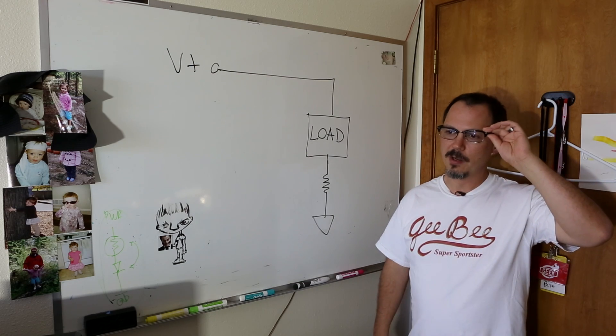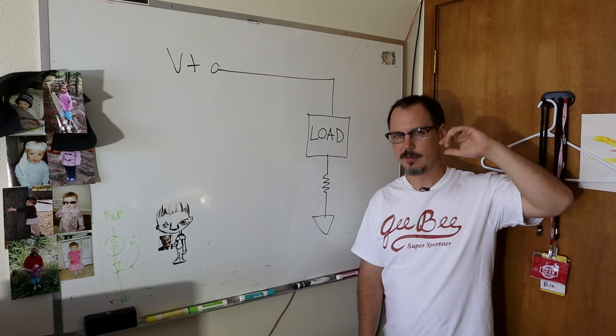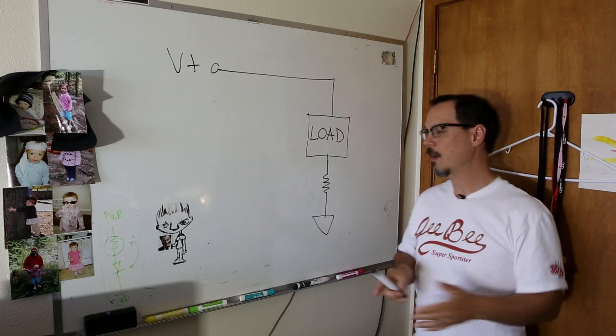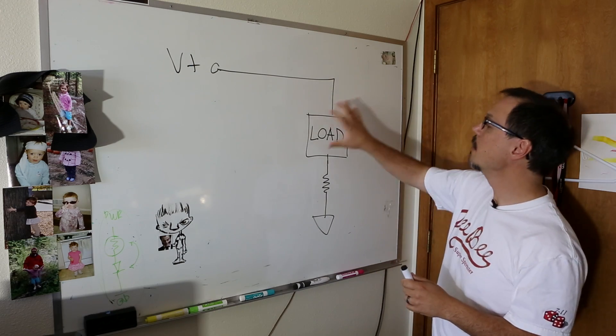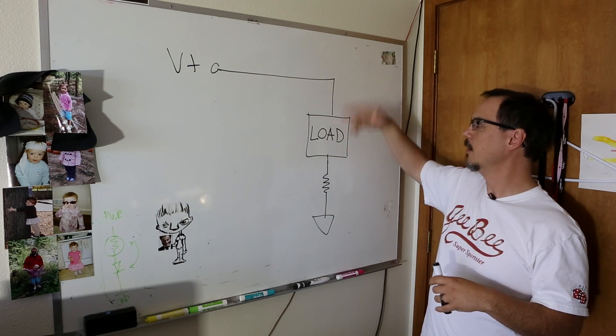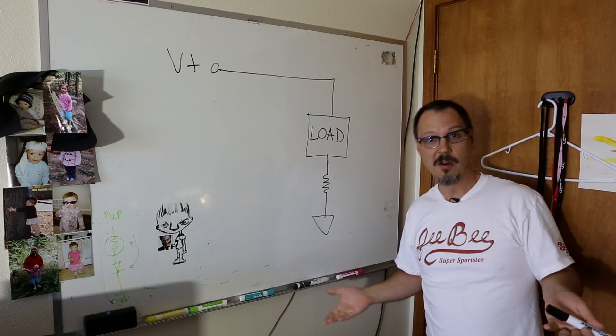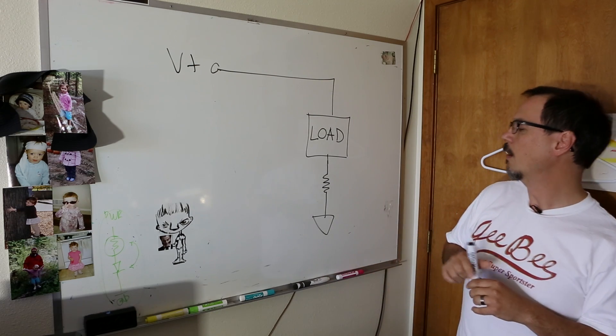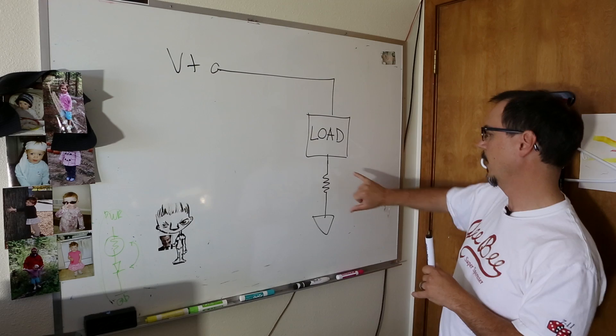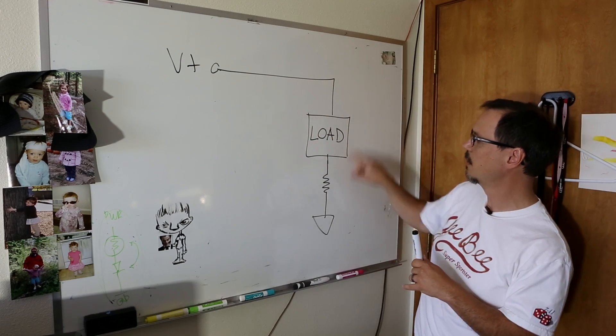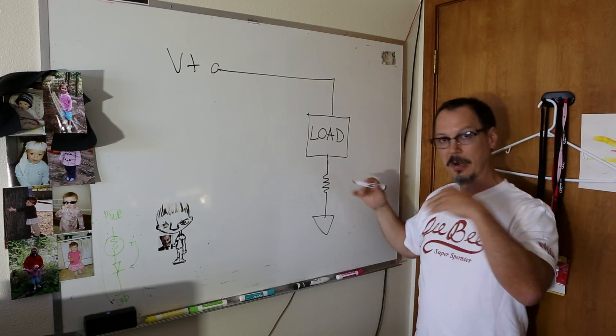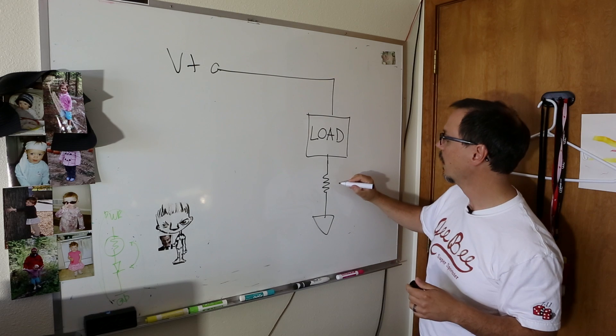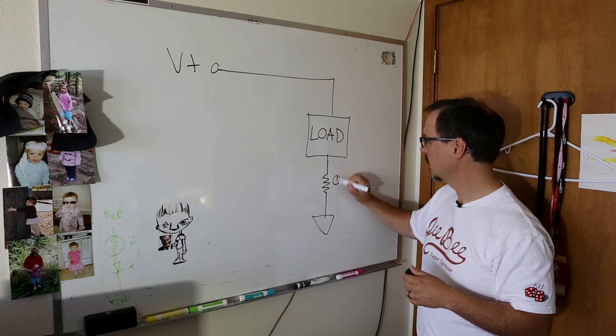So there's a couple of different ways to sense current in a circuit. This, using Ohm's Law. So suppose you've got something sitting out here that is going to have a varying current and you need to know what it's going to do, right?